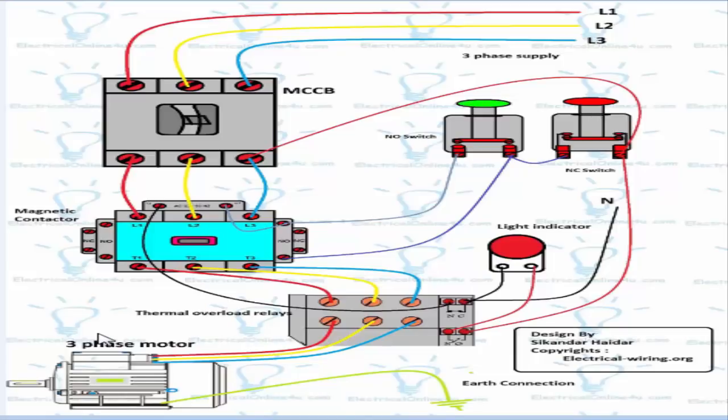In case of over current flow the thermal overload relay bimetallic strip expands and converts this NC to the NO and NO to the NC. Here we will open connections so the contactor will de-energize automatically, and here we will close connections so this light indicator will be on.